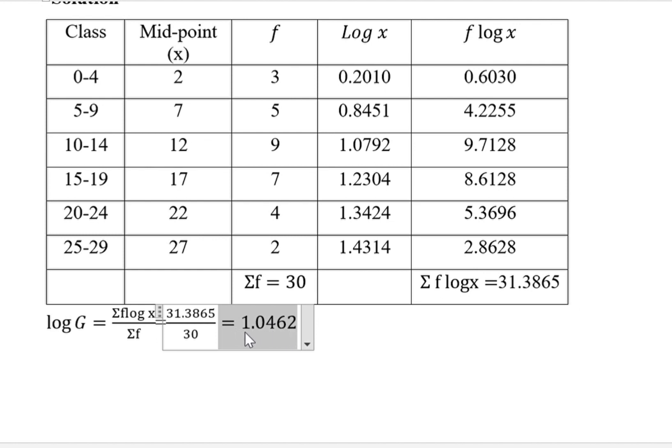So this is the logarithm of the geometric mean for this data. This is the logarithm. For us to get the actual value, we get the antilogarithm for this value. And if you get it from the calculator, you'll get the antilog of 1.0462 being 11.12.